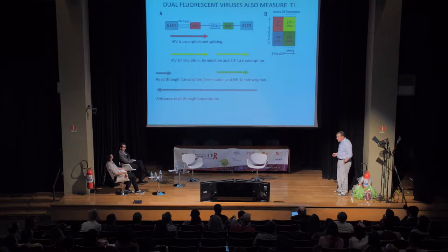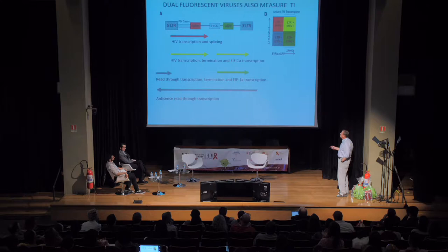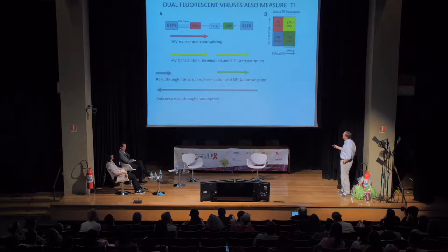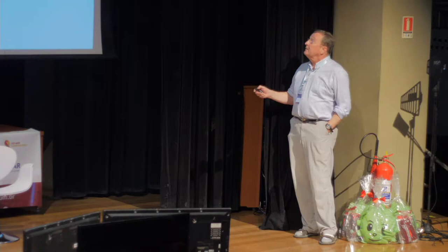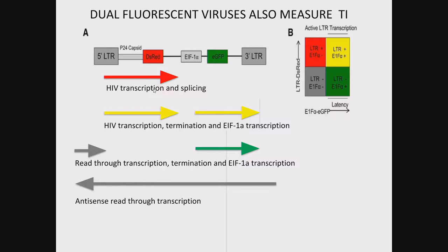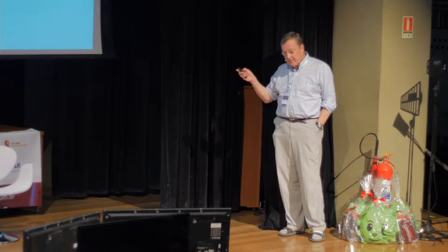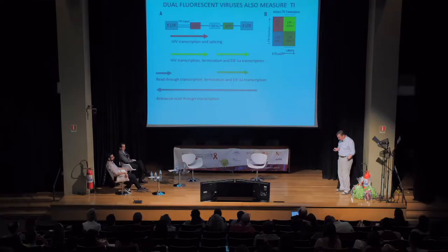The best example of this phenomenon uses dual fluorescent viruses — either Sadowsky's or Eric Verdin's — where you can see red cells, green cells, yellow cells, or cells with no fluorescence. Red cells have transcribed from the LTR. Yellow cells have transcribed from the LTR but somehow terminate such that both promoters are on, making both red and green. Cells transcriptionally interfered by read-through transcription of the upstream LTR are only green. In the opposite orientation, cells express no fluorophore. About 10% of all viruses going into Jurkat cells are transcriptionally interfered and do not express full viral proteins.